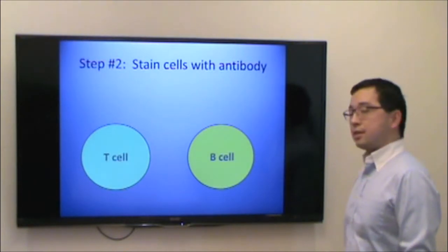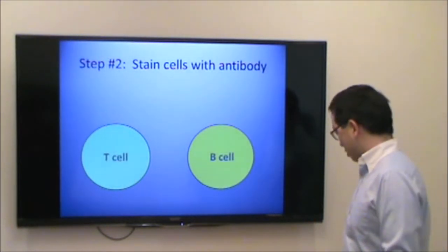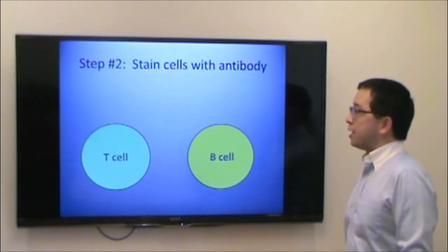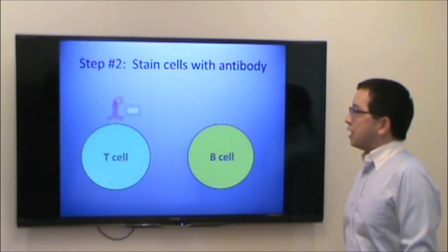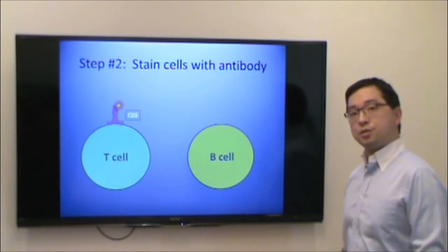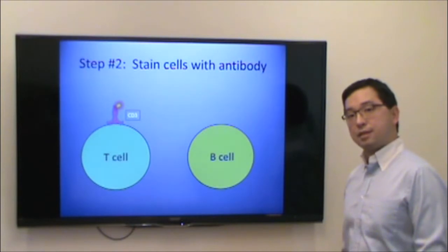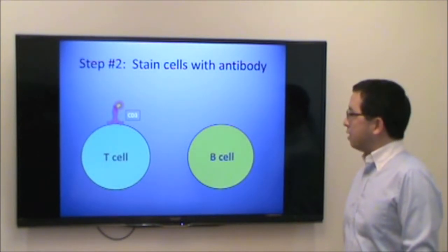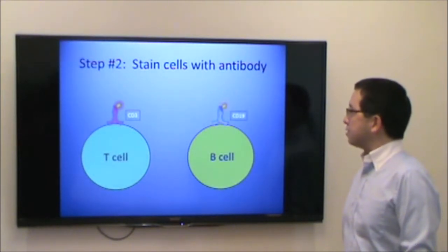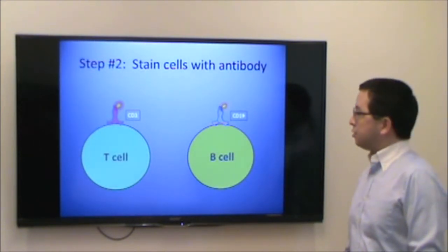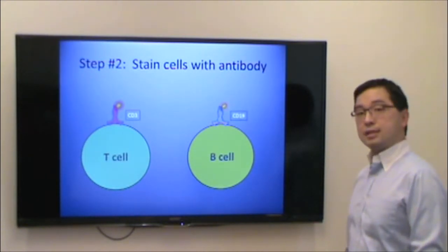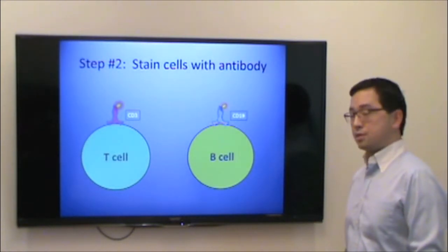The next step is to label the cells. If you are trying to identify T cells, you can label them with a fluorescently labeled antibody directed against CD3. And if you're interested in finding B cells, you can label them with a fluorescently labeled antibody directed against CD19 or CD20.